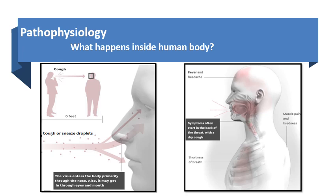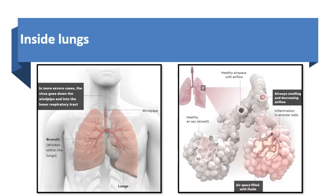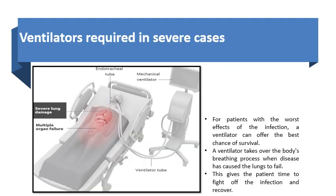The mechanism of this infection has been studied as follows. Once a person inhales the cough or sneeze droplets present in the surrounding air, the virus gains an entry into the human body, soon after which the symptoms begin to appear. Lungs tend to be the organs most affected by COVID-19, where the virus causes swelled-up alveoli, leading to reduced airflow, hence respiratory failure. In severe cases, a ventilator can offer the best chance of survival as the ventilator takes over the patient's breathing process, providing the patient with little time to fight back the infection and recover.